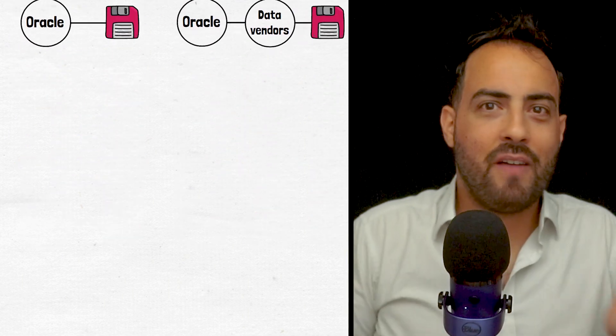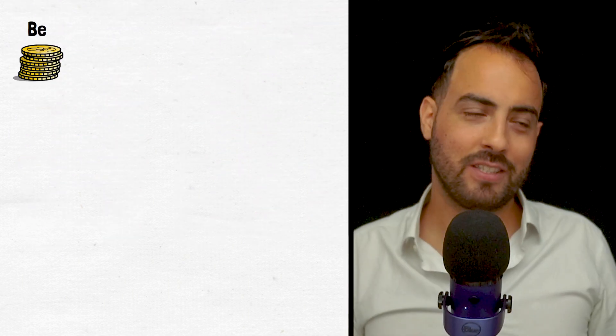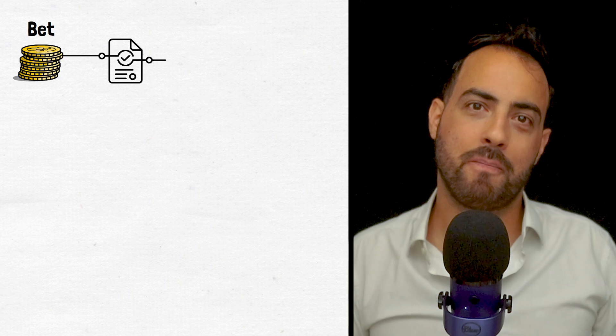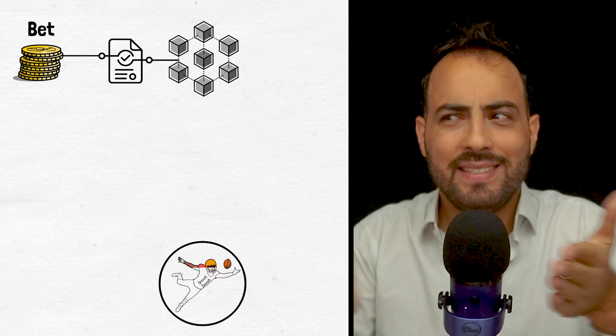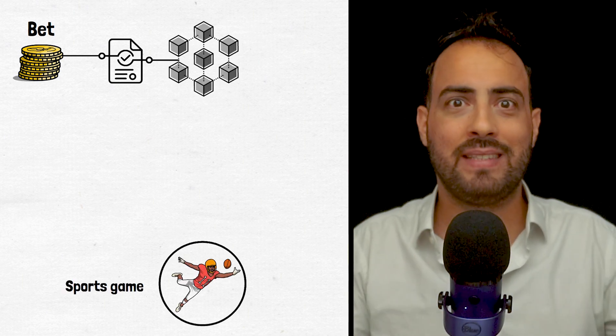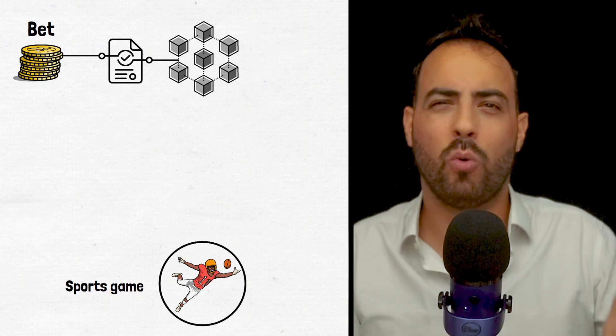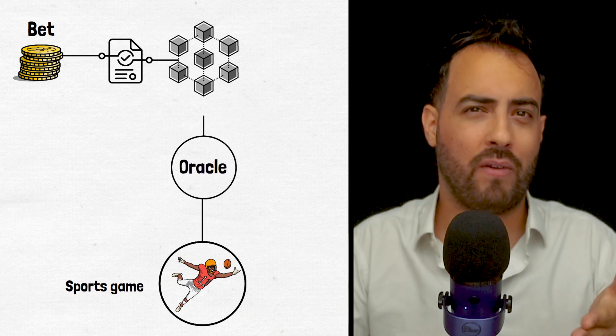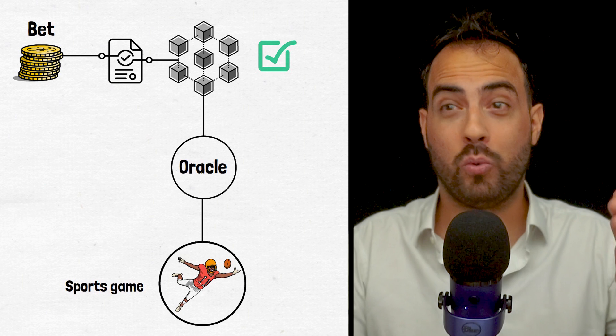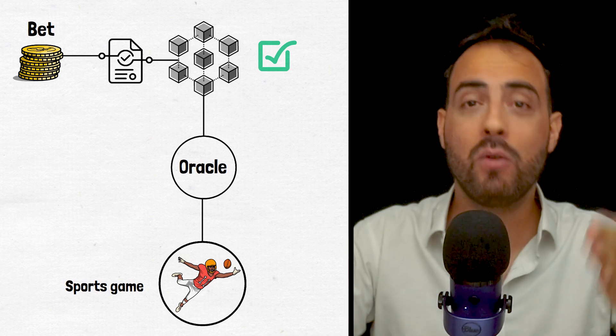For example, if you have a bet through a blockchain smart contract on who will win a sports game, the blockchain isn't linked to the sports game directly, so it relies on trusted data vendors to provide it with accurate data to determine the outcome and reward the winner.